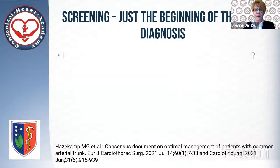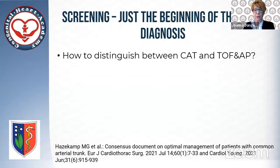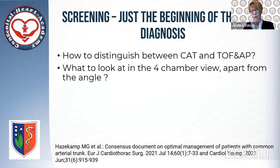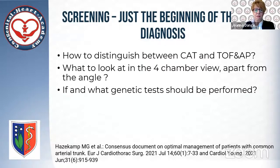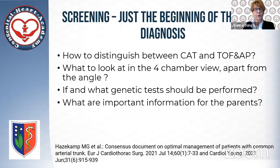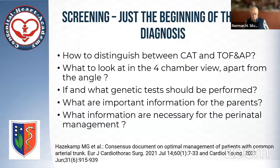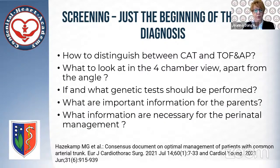Screening is just the beginning of the final diagnosis. As we wrote in our consensus document, we have to ask ourselves: how to distinguish between common arterial trunk and tetralogy of Fallot with pulmonary atresia — easy after birth but quite complicated before. What to look at in the four-chamber view apart from the angle? Are there any other clues? If any genetic testing, what kind should be performed? What information is important for parents and necessary for perinatal management? All those questions should be answered before delivery.